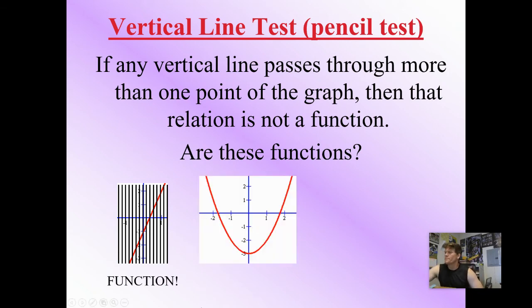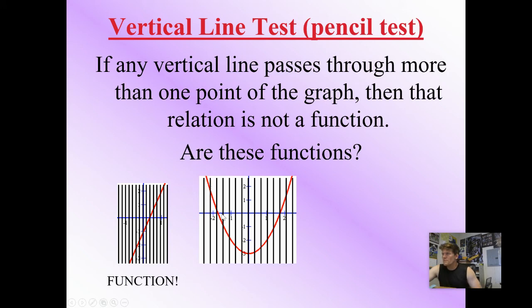Here's another example. We have this u-shaped graph. This is called a parabola, a quadratic function, but we'll get to that much later on. Taking my pen, working through vertical line test. Each time the red line only hits once, this is a function.